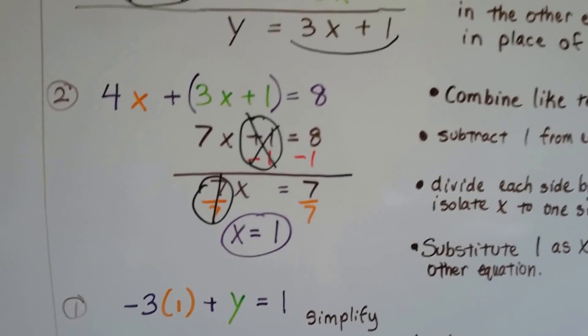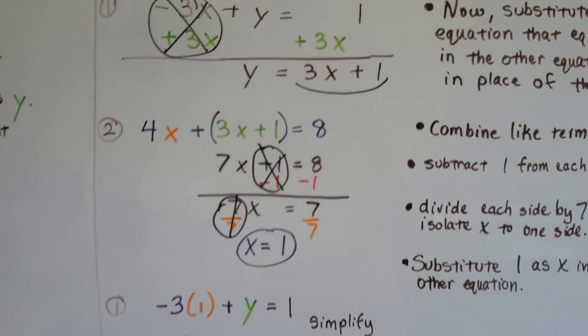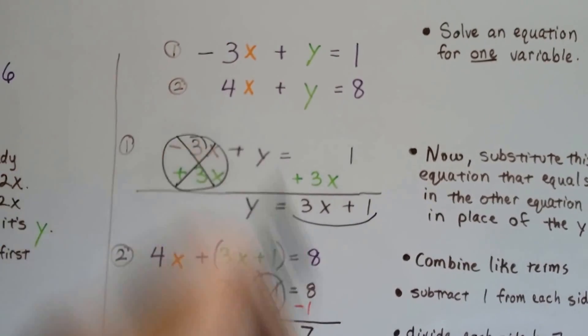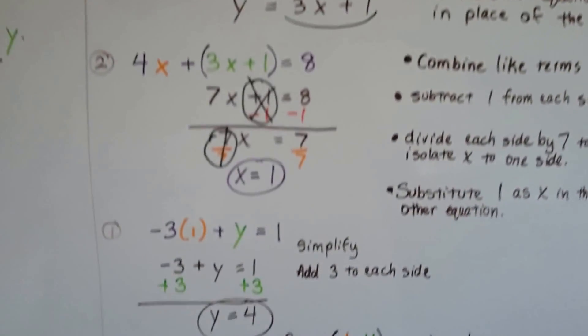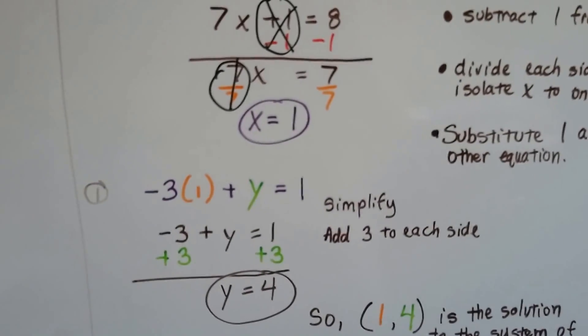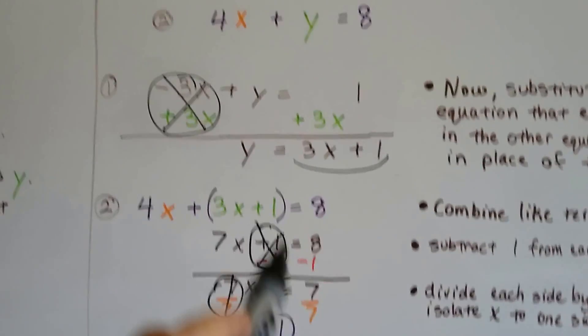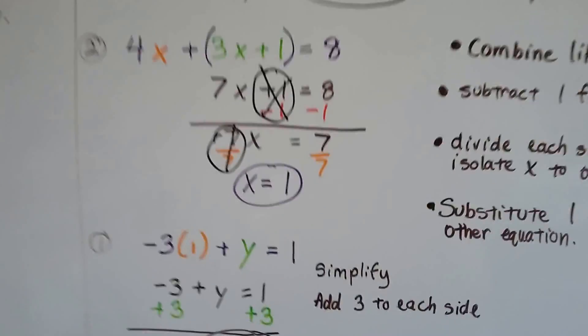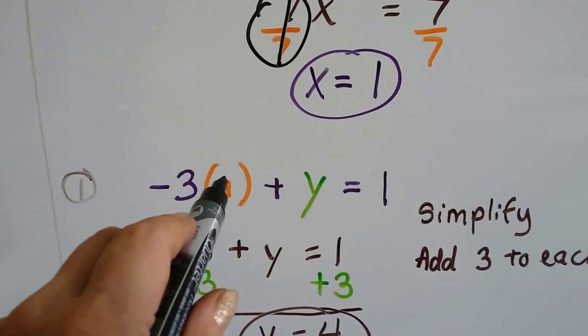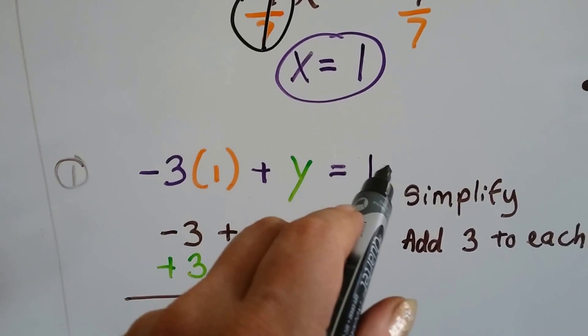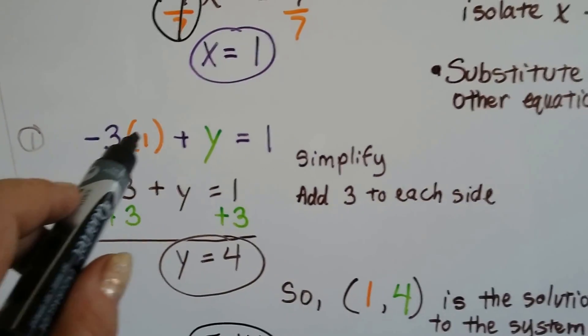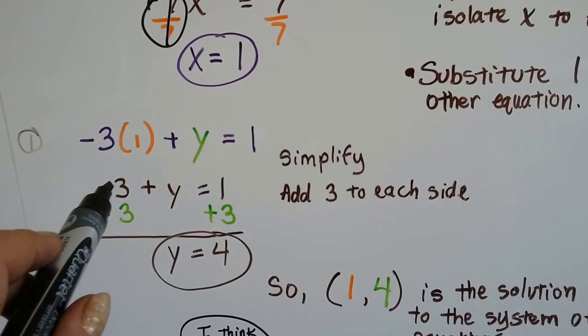Now we know what x equals. We can plug that in to this equation, and we can find out what y is. It said negative 3x plus y equals 1. Let's put 1 in place of that x right there. So we've got negative 3 times 1 plus y equals 1. Well, negative 3 times a positive 1 is a negative 3.